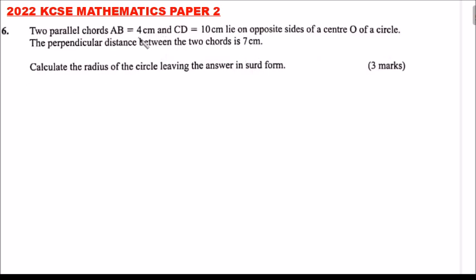Now, we use this information to sketch a circle and see exactly what we need to calculate. We can see the two chords - this is the center. This is 10 cm, this is 4 cm. This is AB and this is CD, and they are parallel. We are also given the perpendicular distance is 7 cm.